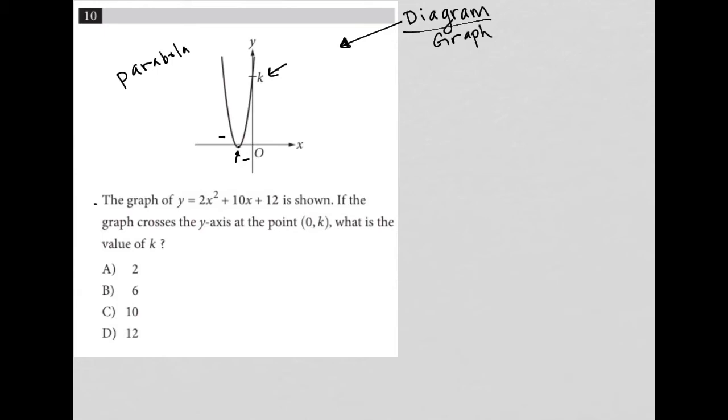So the question says the graph of y equals 2x squared plus 10x plus 12 is shown. Okay, well, that's useful to know. So the graph for this equation is 2x squared plus 10x plus 12. Now, that automatically tells me that k equals 12.